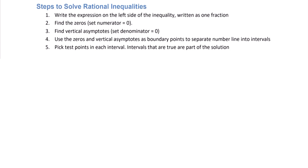To solve a rational inequality, we first write the expression on the left side of the inequality as a single fraction. Step 2, find the zeros by setting the numerator equal to zero and solving. Next, find vertical asymptotes by setting the denominator equal to zero and solving. Step 4, use the zeros and vertical asymptotes as boundary points to separate the number line into intervals. Finally, pick test points in each interval. Intervals that are true are part of the solution.